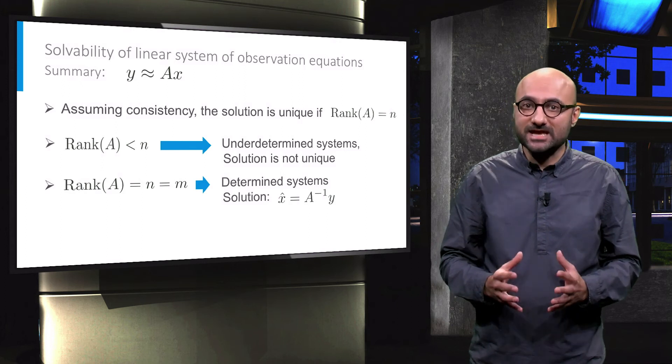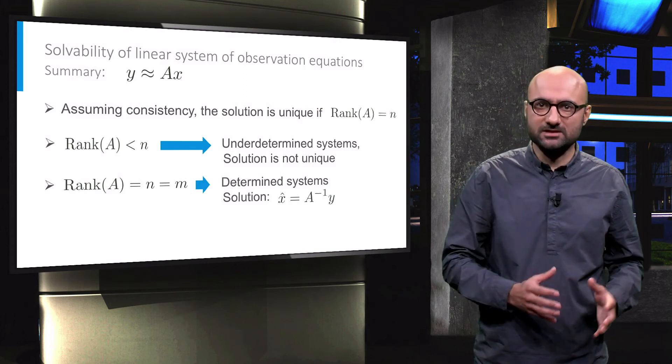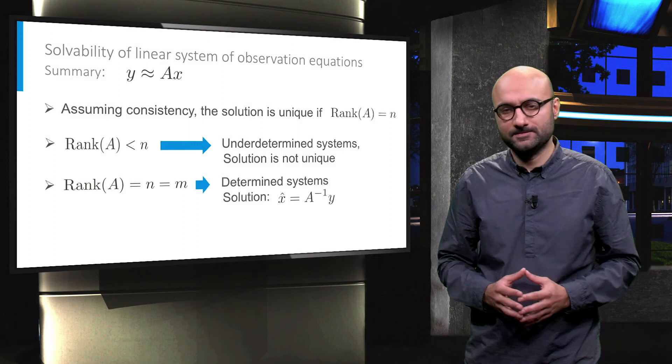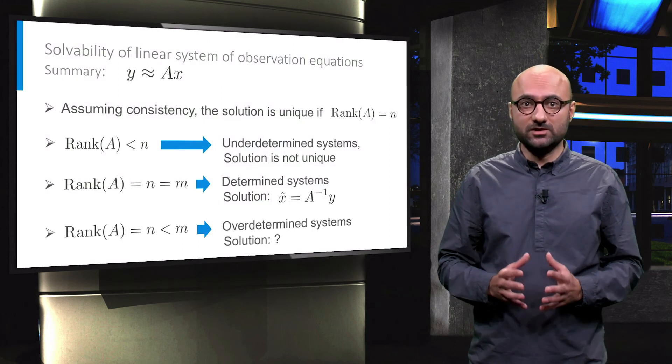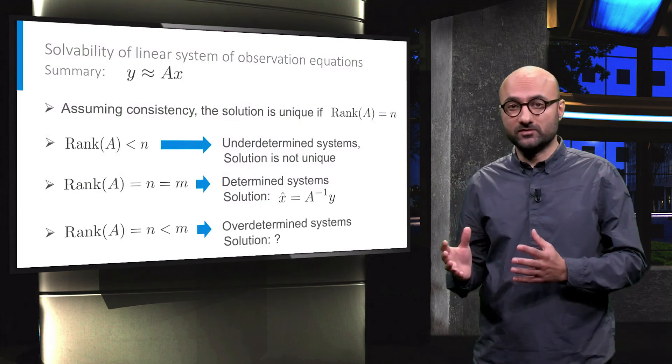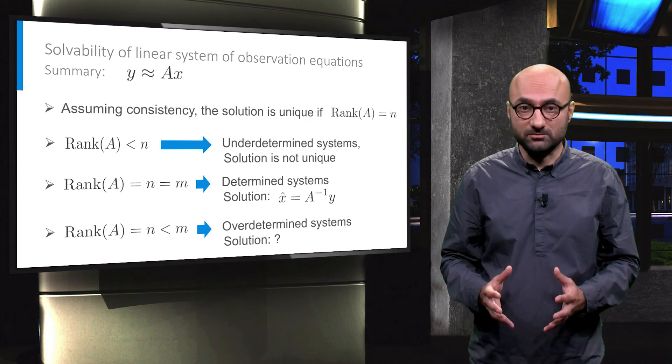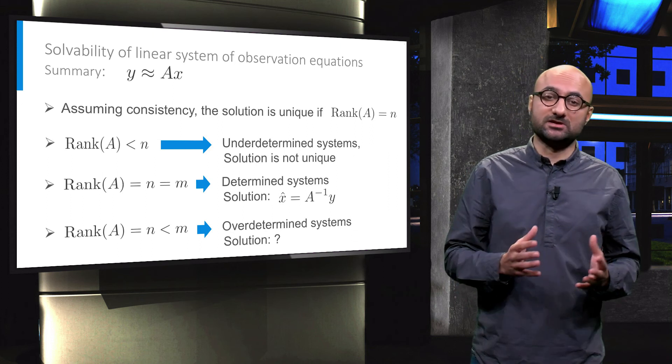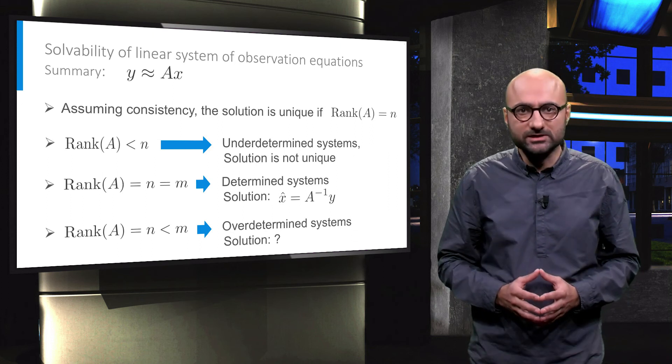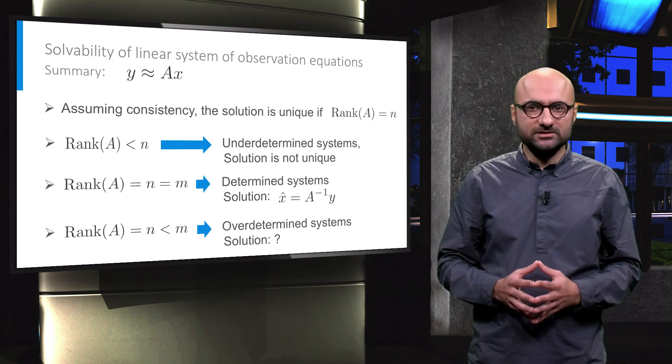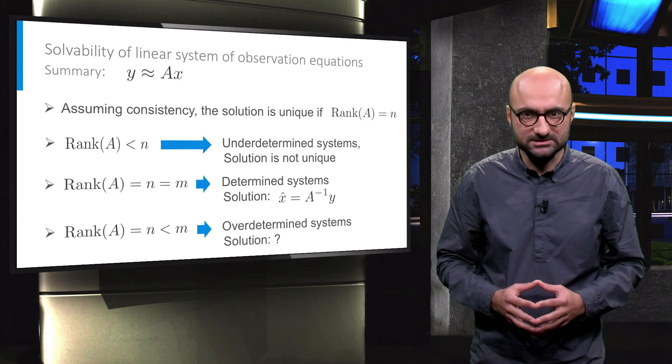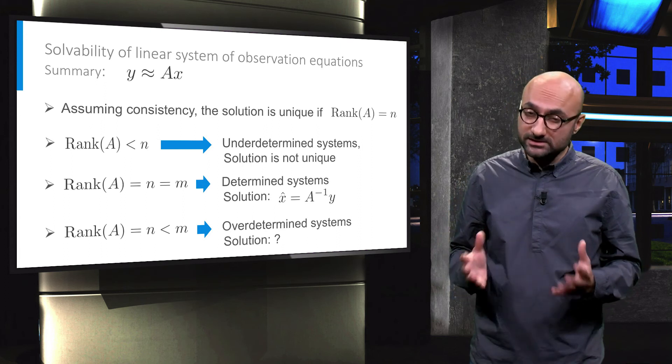And the final conclusion is: the full column rank systems with the number of unknowns smaller than the number of observations are over-determined. These systems may be consistent or not. However, due to measurement errors, we often in practice deal with inconsistent systems for which theoretically there is no exact solution.